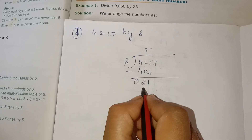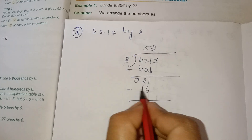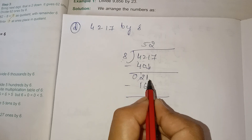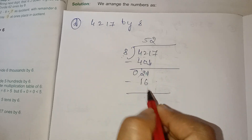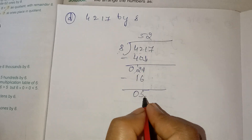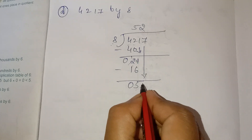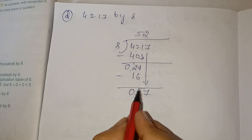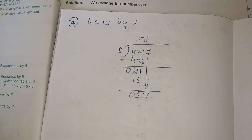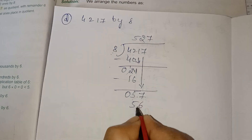Recall table of 8: 8 ones are 8, 8 twos are 16, 8 threes are 24, 8 twos are 16. 21 minus 16: 1 minus 6 is not possible — take a borrow from 2. 2 becomes 1 and this 1 becomes 11. 11 minus 6 is 5, 1 minus 1 is 0. I got 5. Take the next number down: 7.